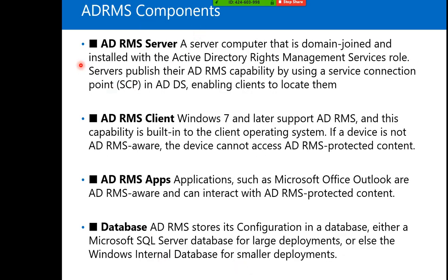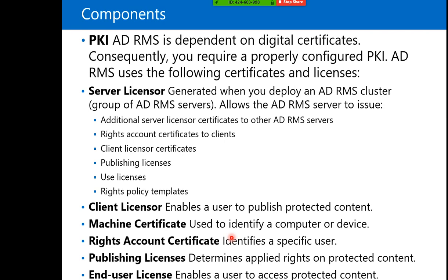ADRMS has many components. We need to configure the ADRMS server, which supports certain Microsoft ADRMS clients such as Windows 10, Windows 8.1, and Windows 7. It supports applications such as Microsoft Outlook. It also requires a database — either SQL Server or Windows Internal Database. Other requirements include Public Key Infrastructure, server licenses certificate, client licenses certificate, machine certificate, rights account certificate, publishing license, and end-user license.